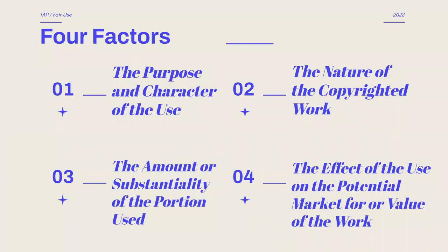In determining fair use there are four factors to be considered. No single factor will determine whether your use of a copyrighted work is fair. Each of these needs to be weighed against each other. The four factors are: the purpose and character of the use, the nature of the copyrighted work, the amount or substantiality of the portion used, and the effect of the use on the potential market for or value of the work.